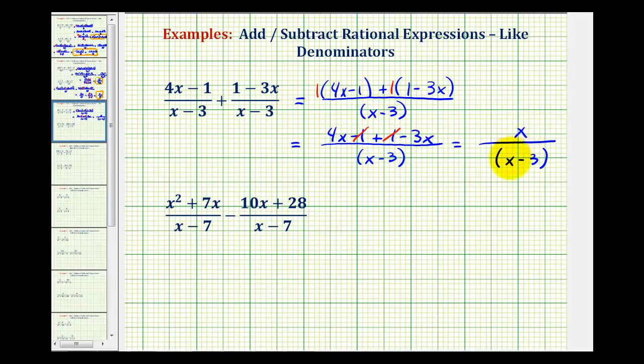Now we need to be careful here. We cannot simplify these x's because we cannot simplify across addition or subtraction. So this would be our sum. If we wanted to, we could drop the parentheses in the denominator since we only have one factor of x minus 3. It could be written like this, or we can write it without the parentheses in the denominator. Either form would be acceptable.